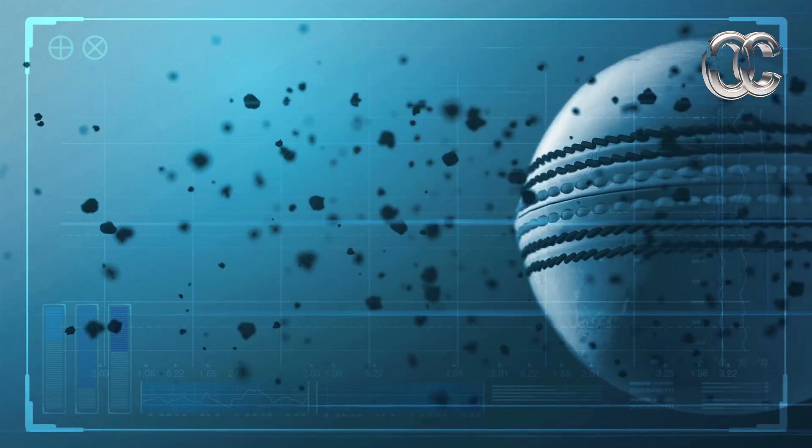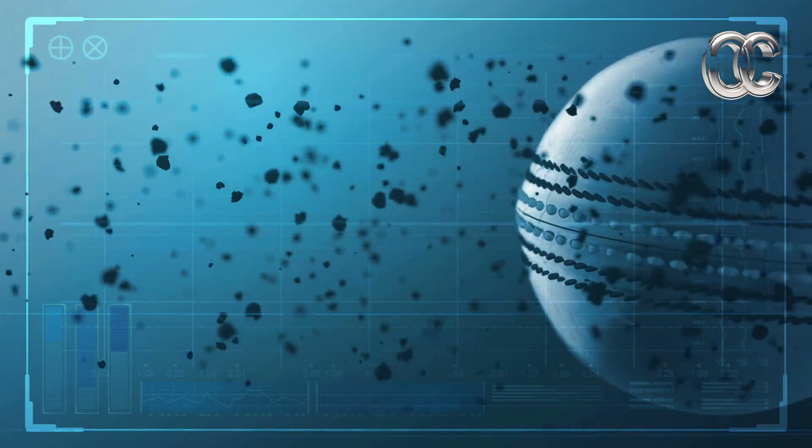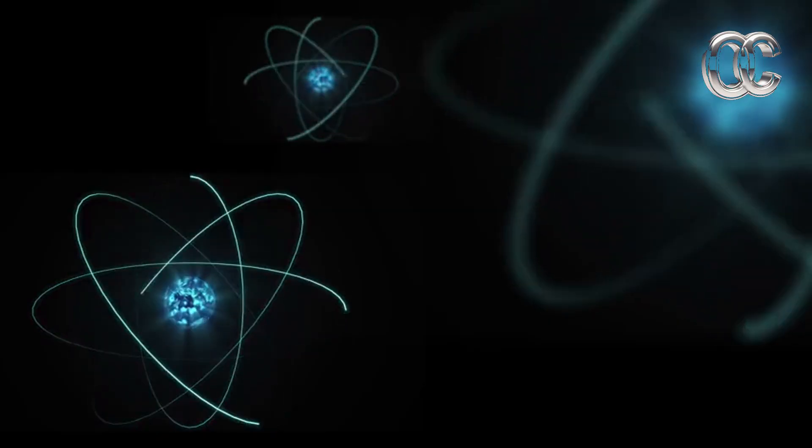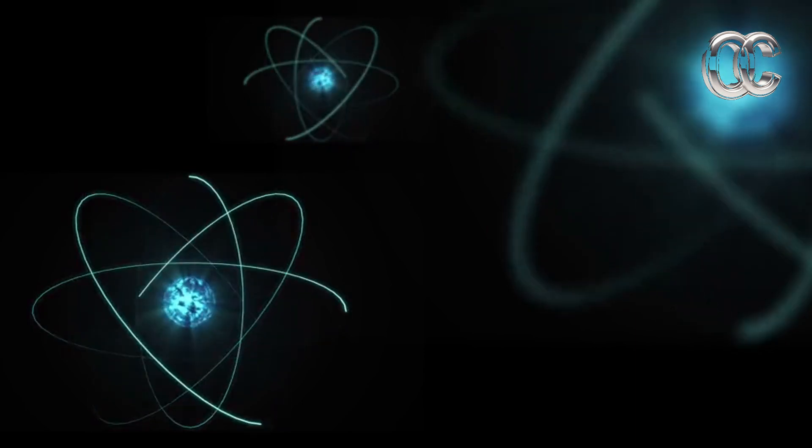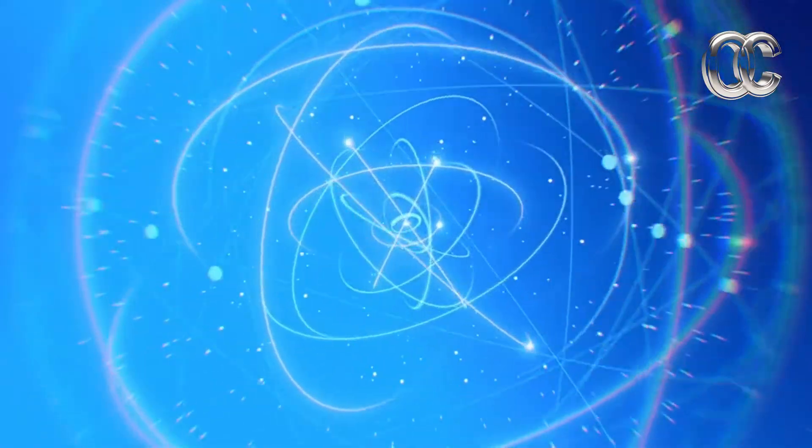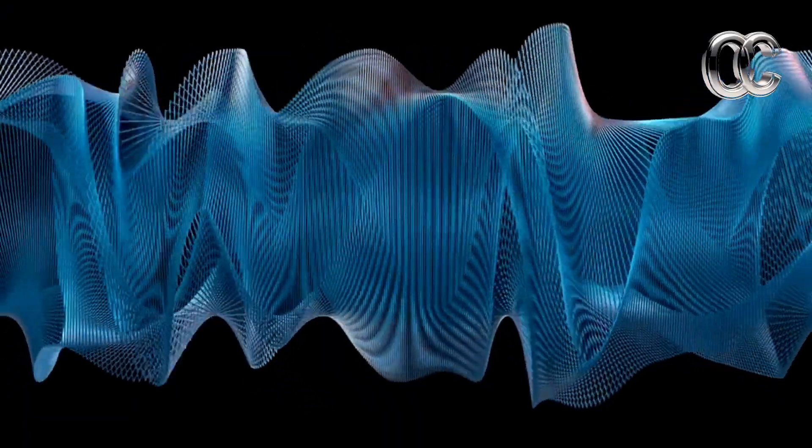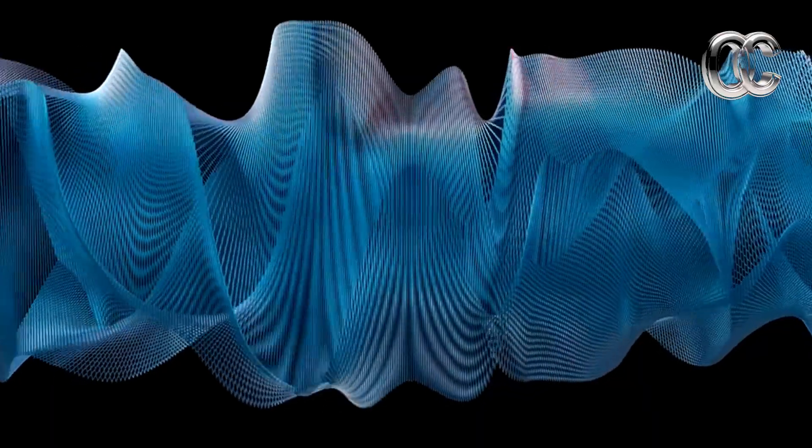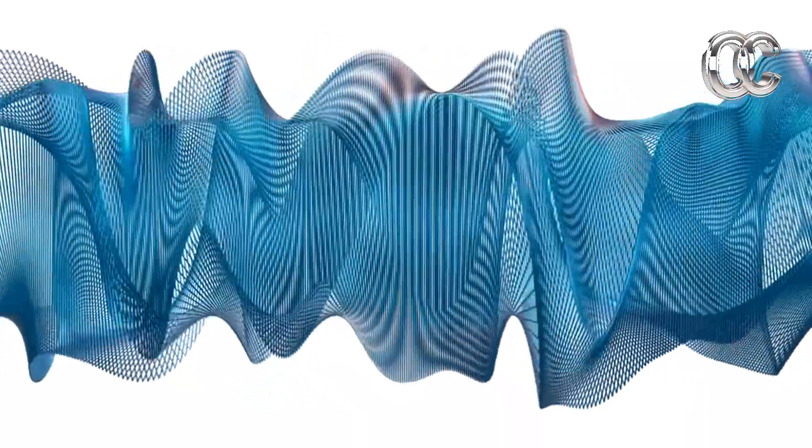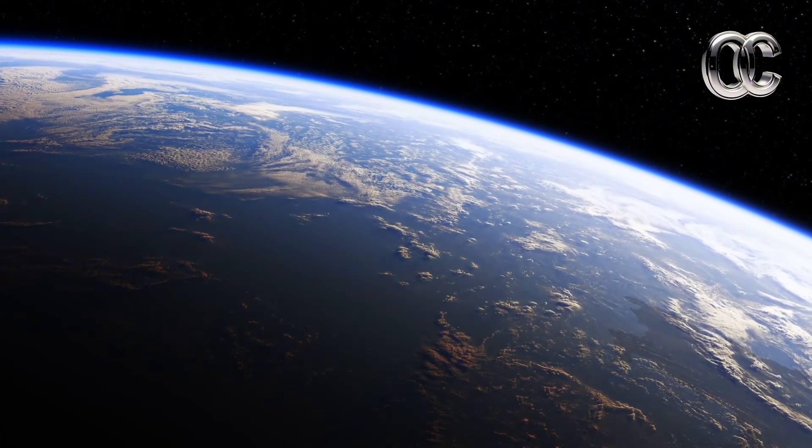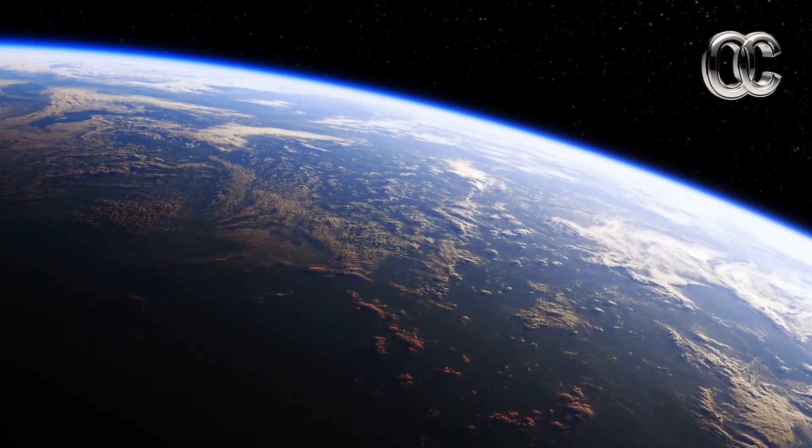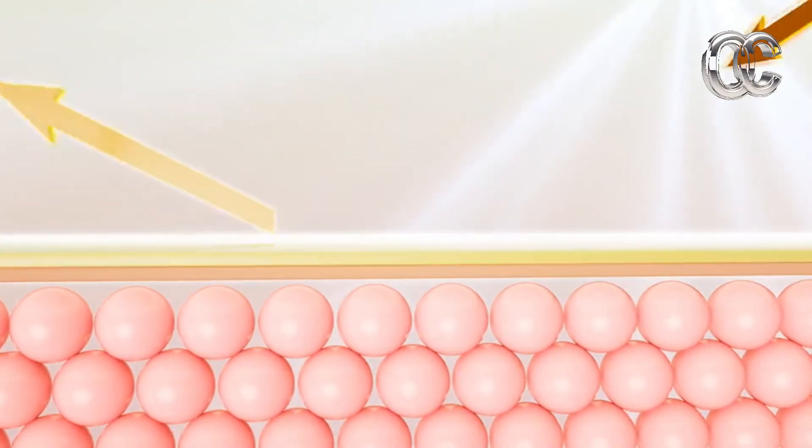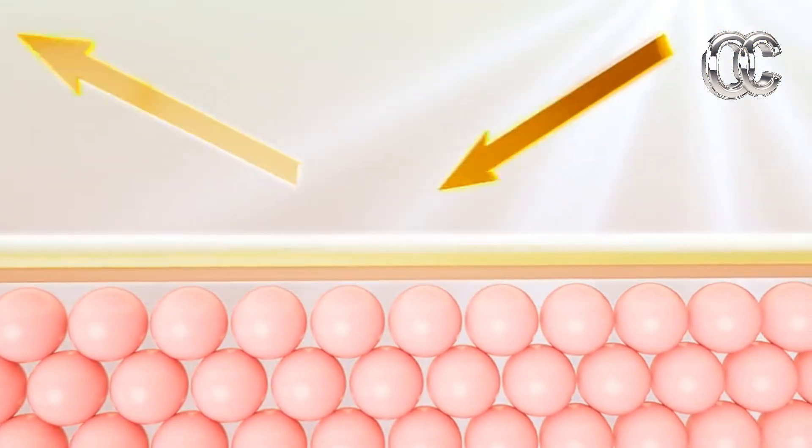To understand tunneling, we must first understand the dual nature of particles. According to quantum mechanics, particles such as electrons, protons, and even atoms behave both like particles and waves. This wave nature is described by the wave function, a mathematical tool that gives the probability of finding a particle at a certain location. The wave function doesn't abruptly stop at a barrier. It gradually decreases, even inside the barrier, and may continue on the other side. When a wave hits a barrier, part of it is reflected and part continues, albeit weakened. If the barrier is thin enough or the wave strong enough, the particle can tunnel through.